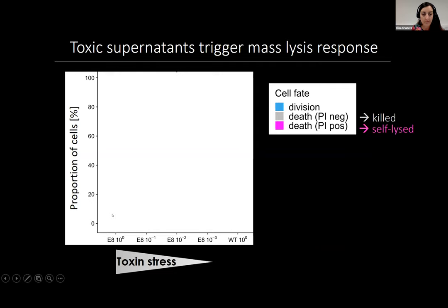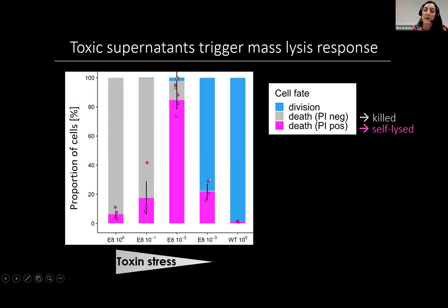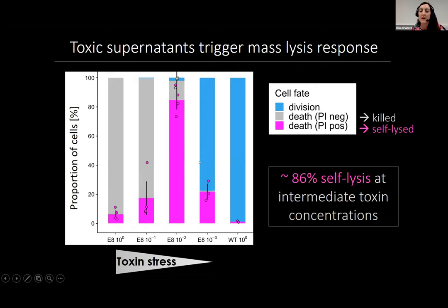Tracking single cells, we plotted whether they're dividing, killed, or self-lysed. At really high toxin concentrations, pretty much all cells are straight up killed and don't even get to self-lyse. As we lower the toxin concentration, more self-lysis occurs, and at intermediate concentrations the majority of cells self-lyse. At even lower concentrations, more cells divide because they're happier and less stressed. We see this interesting phenomenon of peak self-lysis: 86% of the population kills itself at intermediate toxin concentrations, which was way more than we expected.